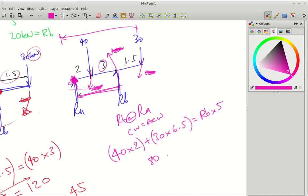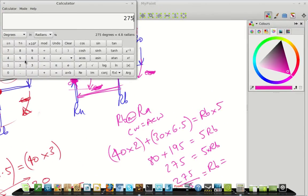So, in this case, 40 times 2 is 80, plus, and then we've got 30 times by 6.5, and that's 195 equals 5RB. So, we've got 195 add 80. That's 275 equals 5RB. So, we don't want to know 5 times RB, we want to know 1RB, so we're going to have to do 275 divided by 5 equals RB, and that's going to be 275 divided by 5 equals 55 kilonewtons.